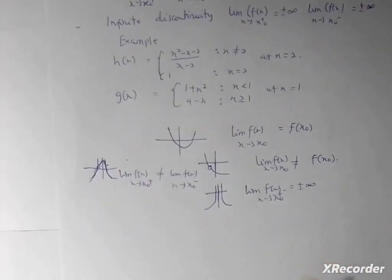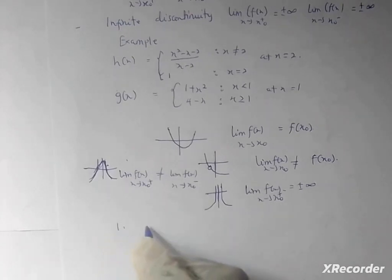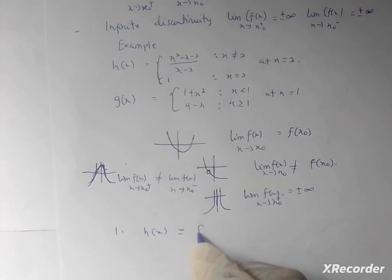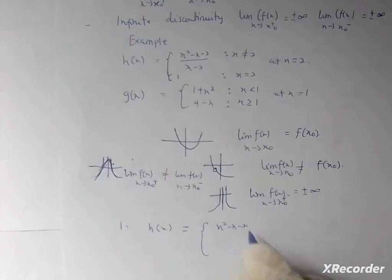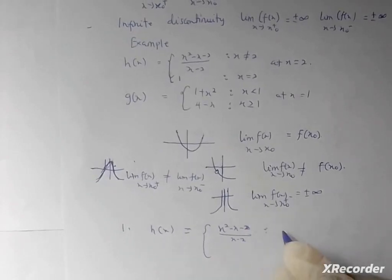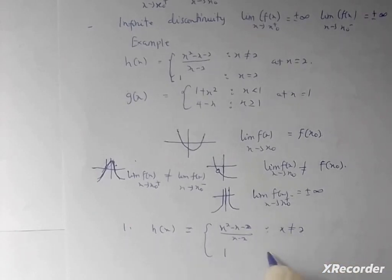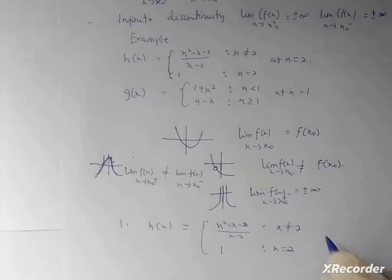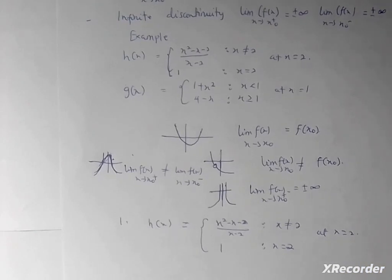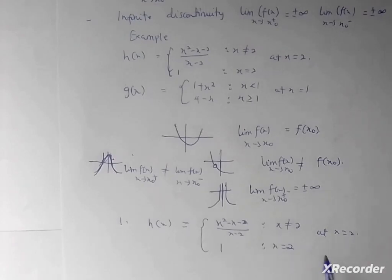Let's solve some examples so you understand how to apply the concept of continuity and discontinuity as well as limits. Our first example: h(x) is a piecewise function equal to (x² − x − 2)/(x − 2) where x ≠ 2, and equal to 1 where x = 2. The question asks us to find the continuity of this function at x = 2. To do this, first find the limit as x approaches 2, then find the functional value at x = 2. If they are equal, the function is continuous; if not, it is discontinuous.